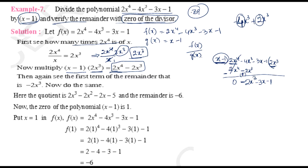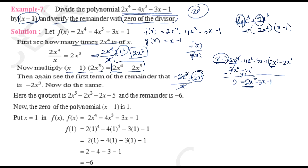Next, take the first term minus 2x³ and divide by x (the first term of the divisor). Minus 2x³ divided by x gives minus 2x². So minus 2x² is the second term of the quotient. Now multiply the divisor x - 1 by minus 2x²: minus 2x² times x equals minus 2x³, and minus 2x² times minus 1 equals plus 2x².